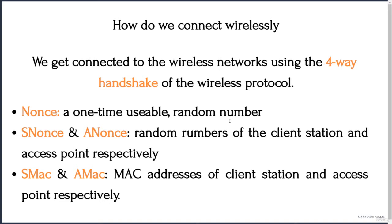Whenever a new node wants to connect to a new wireless network, it undergoes a four-way handshake with the access point. You know what an access point is, but you don't know what a four-way handshake is — we are going to talk about this soon. This four-way handshake is necessary for each node to follow so that they can establish a secure wireless channel between the access point and itself. Before understanding this important procedure, let us understand some short terms related to it.